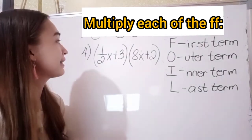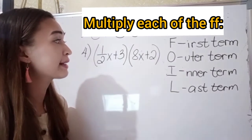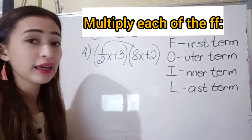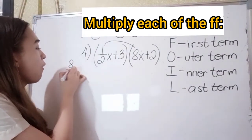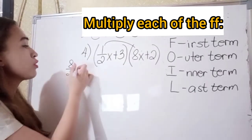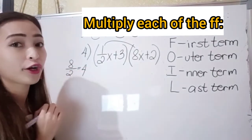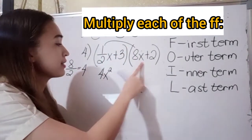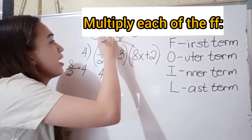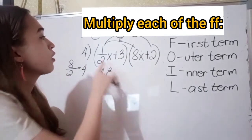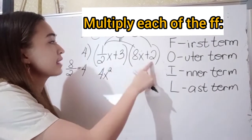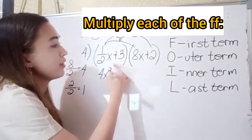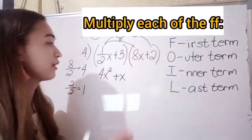For number 4, we have one-half x plus 3 times 8x plus 2. Using the FOIL method: the first term is one-half x times 8x. One-half times 8 becomes 8 over 2, and 8 divided by 2 is 4, so we have 4x squared. The outer term is one-half x times 2: 1 half times 2 gives 2 over 2, which equals 1, so we have plus x.